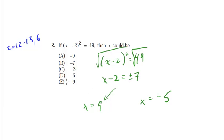So which one matches, well it looks like E matches, and that's going to be the answer, and again we could plug that in, 9 minus 2 is 7, 7 squared is 49, so that of course works.